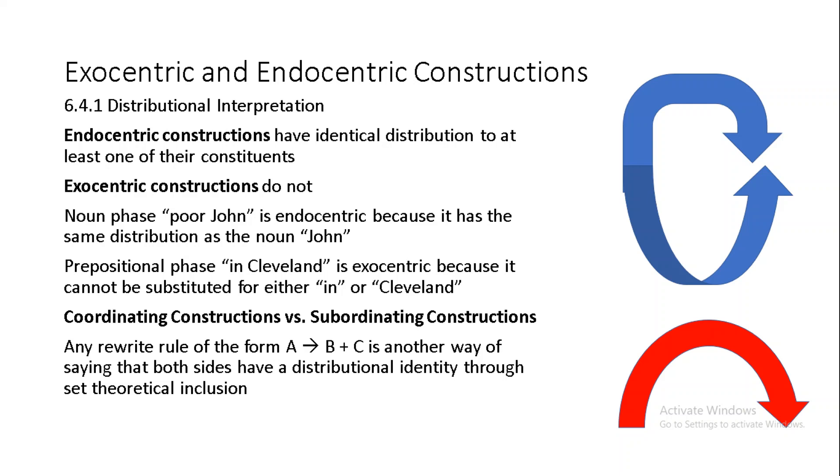This would, for example, allow us to contrast the endocentric constructions, which have identical distribution to at least one of their constituents, with exocentric constructions, which do not. For example, the noun phrase poor John has the same distribution as the noun John. That is to say, a noun phrase can reliably be substituted for a noun within a particular string. So this really is an endocentric construction. In contrast, the prepositional phrase in Cleveland is exocentric because it cannot be substituted either for the preposition in nor for the context where the noun Cleveland occurs. Just try it yourself if you don't believe me.